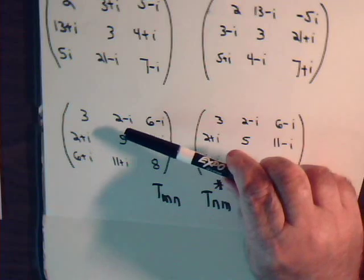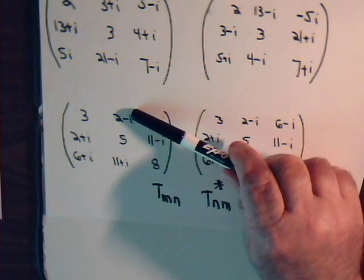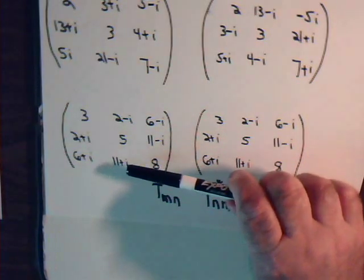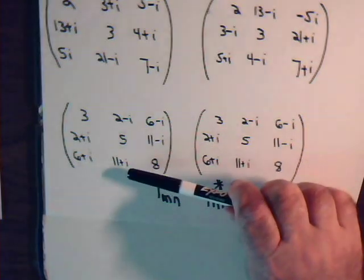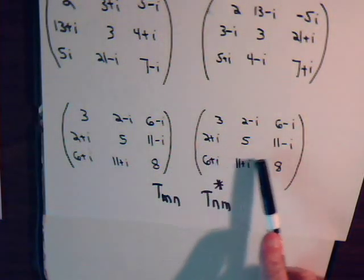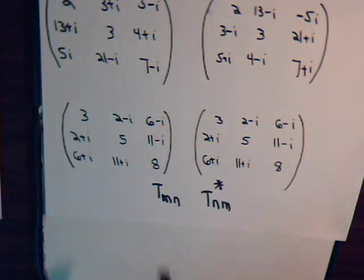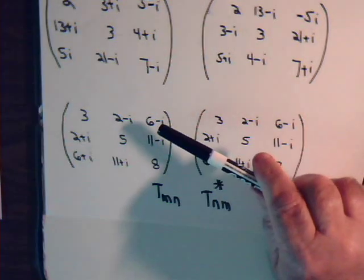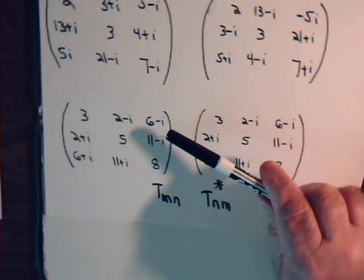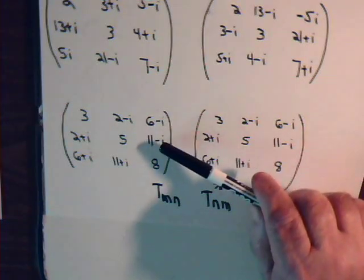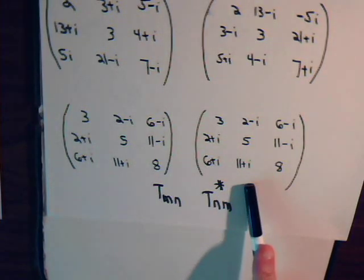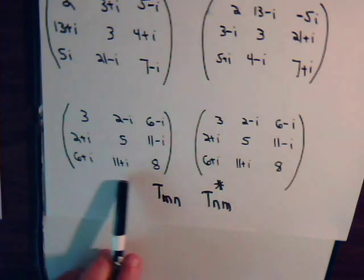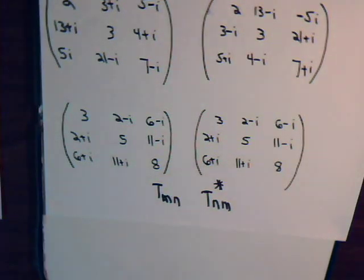Likewise, the second column — we take the complex conjugate — becomes the second row in the adjoint matrix. So we have 2 plus i and 11 minus i, which is already equal to the second row in the original matrix. And the same thing for the third column: 6 plus i and 11 plus i becomes the third row — 6 plus i, 11 plus i, 8 — which is already the third row in the original matrix.